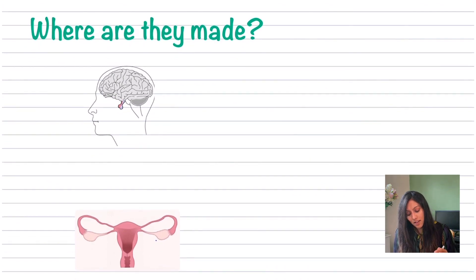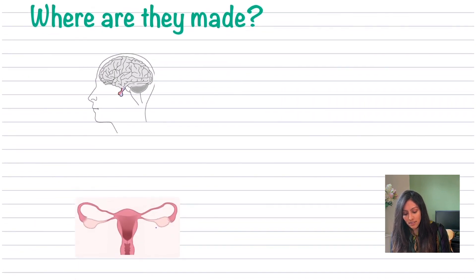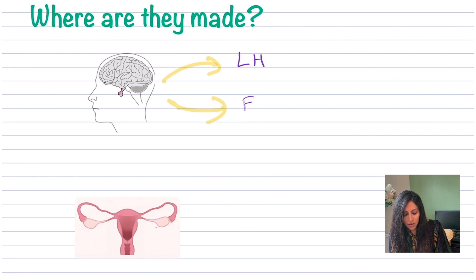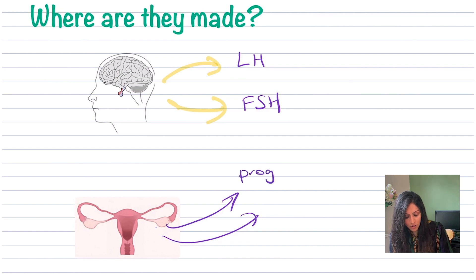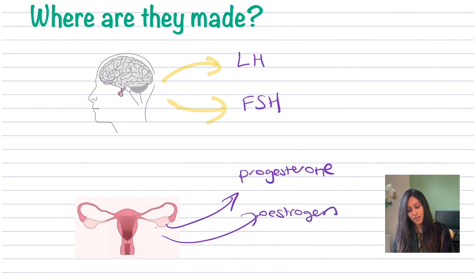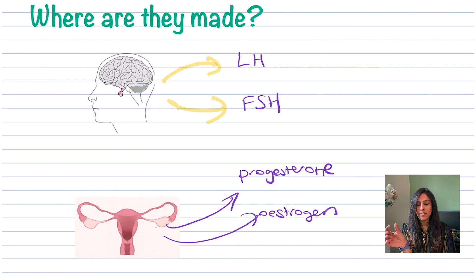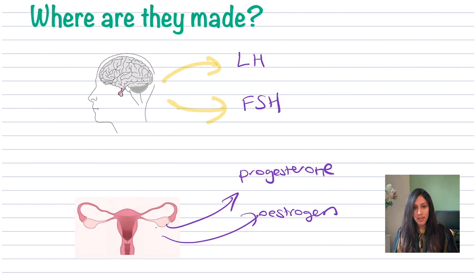Where are they made? The pituitary gland, found in the brain, secretes the hormones LH and FSH. The hormones released from the ovaries are progesterone and oestrogen. A really easy way to remember this: the abbreviated names — LH and FSH — always come from the pituitary gland, whereas the longer words — progesterone and oestrogen — are released from the ovaries.